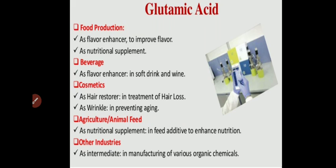Now, what are the applications of glutamic acid? Glutamic acid is basically used as a flavor enhancer in various food industries to improve the flavor of food materials. It also supplies different kinds of nutrients, so it is used as a nutritional supplement. Glutamic acid is also applied in various beverage industries, where it increases the flavor of various soft drinks and wines.